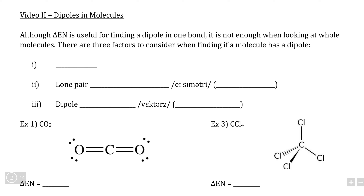In this video, we're going to be looking at how to determine whether a whole molecule is polar or non-polar, as opposed to just looking at a single bond. As we saw in the previous video, the first thing we need to determine is the electronegativity difference between the two atoms joined by the bond, and with molecules, we do this exactly the same way.